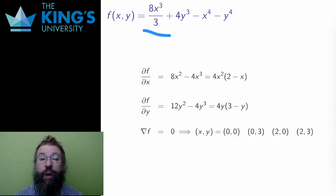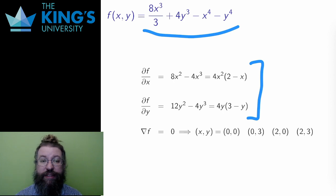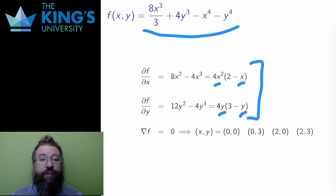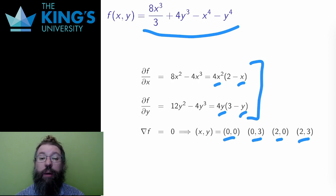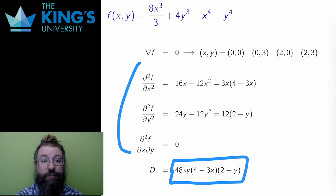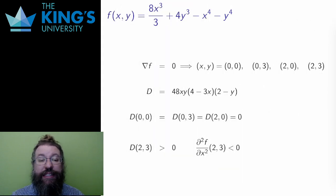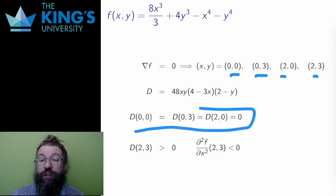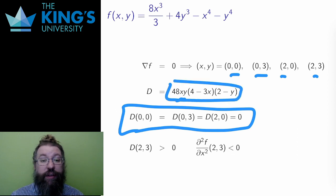Finally, let me do one last example. Here is one more scalar field of two variables. I calculate its partials and set them to zero. The x partial is zero when x is 2 or 0, and the y partial is zero when y is 3 or 0. All combinations give critical points, so there are four: (0,0), (0,3), (2,0), and (2,3). Then I calculate the second partials and the Hessian determinant. The Hessian determinant has the form 48·x·y·(4 − 3x)·(2 − y). For the first three critical points, whenever either x or y is zero, D is zero — so the test is inconclusive for those three points.